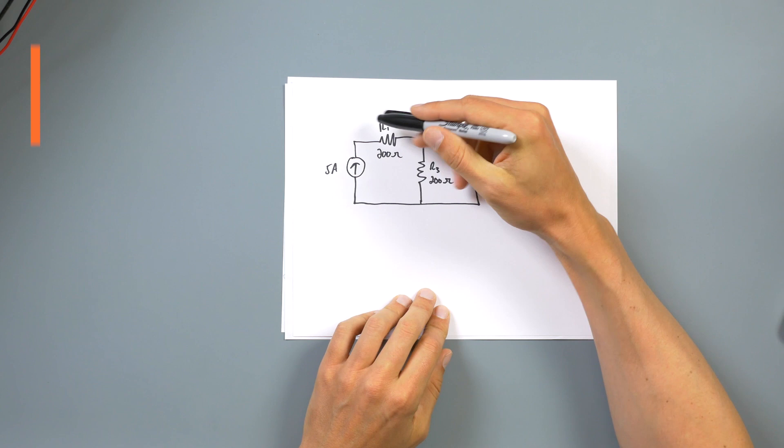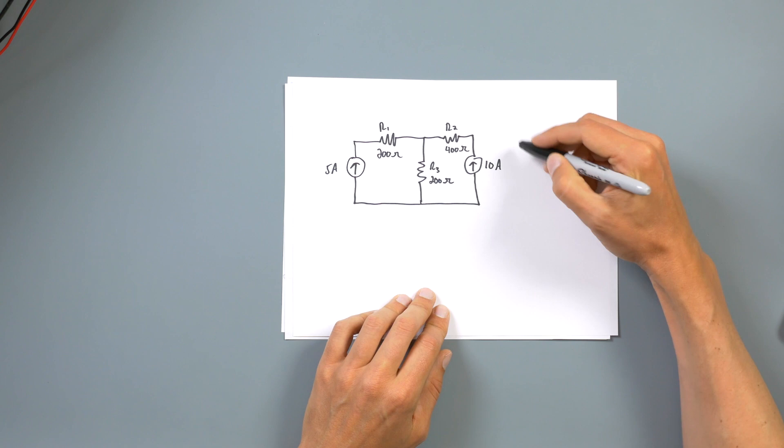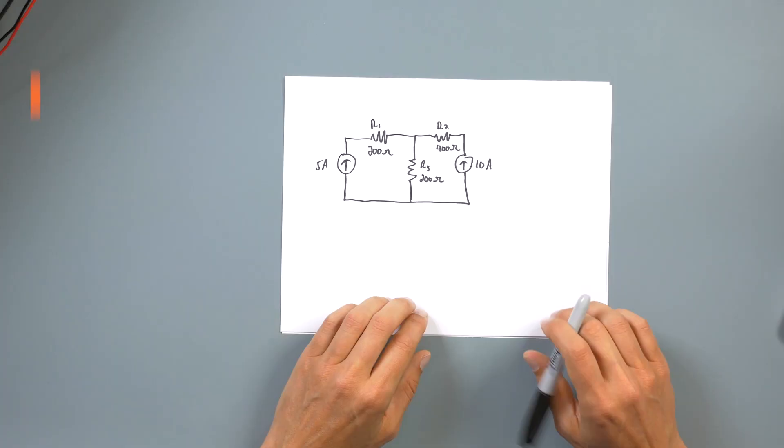Step four is simply taking those equations and putting them together for each node. If you have an equation for the current flowing through there, and another current through there, and another current through there, we know at this node it's going to equal zero. So you're going to say I1 plus I2 minus I3 equals zero. You're taking those branch equations and putting them into the KCL equation where everything equals zero.